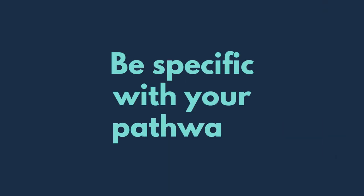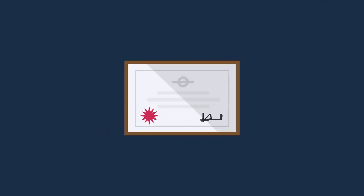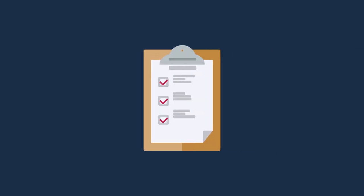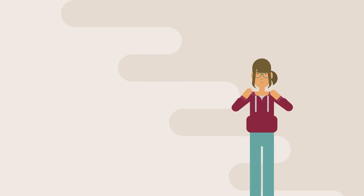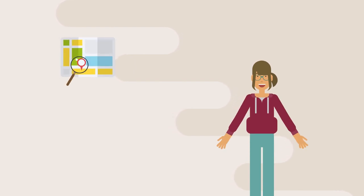Be specific with your pathways and include details about the qualifications you need to gain or tasks you need to complete. For example, if you need to complete a course, work out where you want to study, how much it will cost and how long it will take.